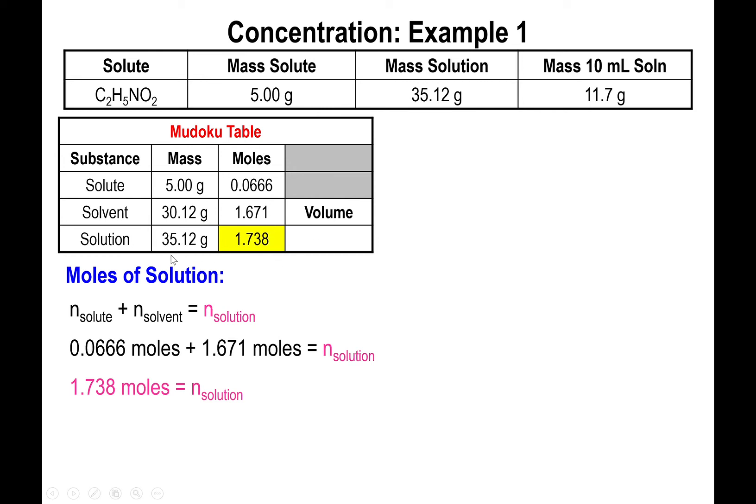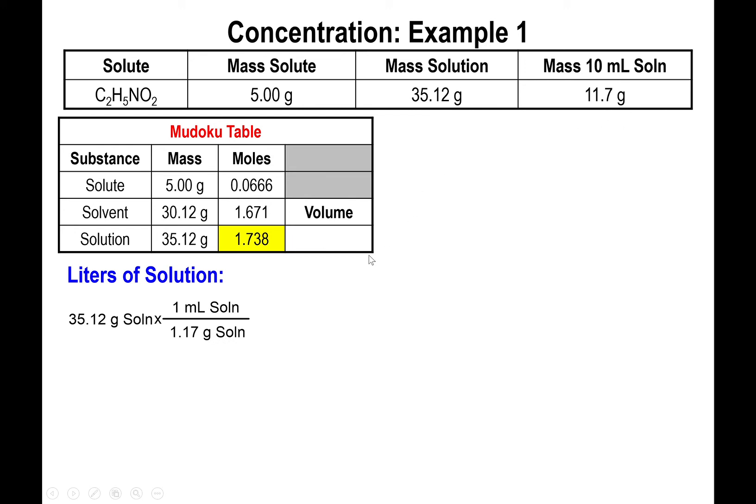Alright, so we're going to input the 1.738 moles of solution. And now, what we're going to do is convert the mass of the solution into volume of solution, specifically liters of solution. For that, we're going to use the density. We're going to divide by 11.7 grams and multiply by 10 mL. Or alternatively, we divide by 1.17 grams and multiply by 1 mL. And right here, we're going to divide by 1,000 mL to turn this into liters. Alright, so now we have the volume of solution in liters, 0.0300 liters. You may be asking yourself, why did I go to liters and not just leave it in mLs? And the reason why is because of one of the terms in the concentrations that I'm going to be describing next.